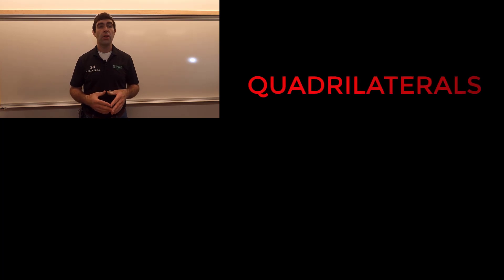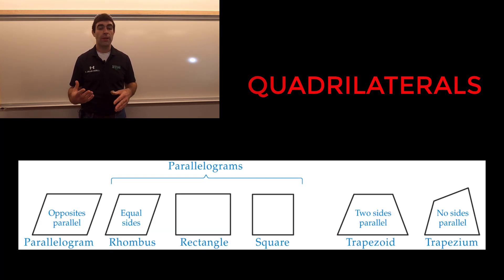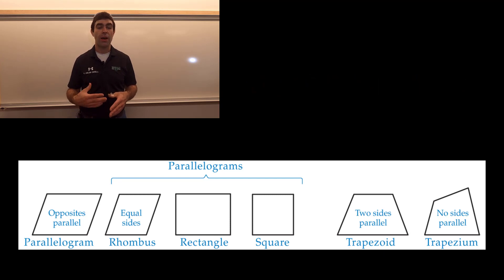Quadrilaterals are four-sided polygons. So these are parallelograms, rhombus, rectangle, square, trapezoid, and trapezium.